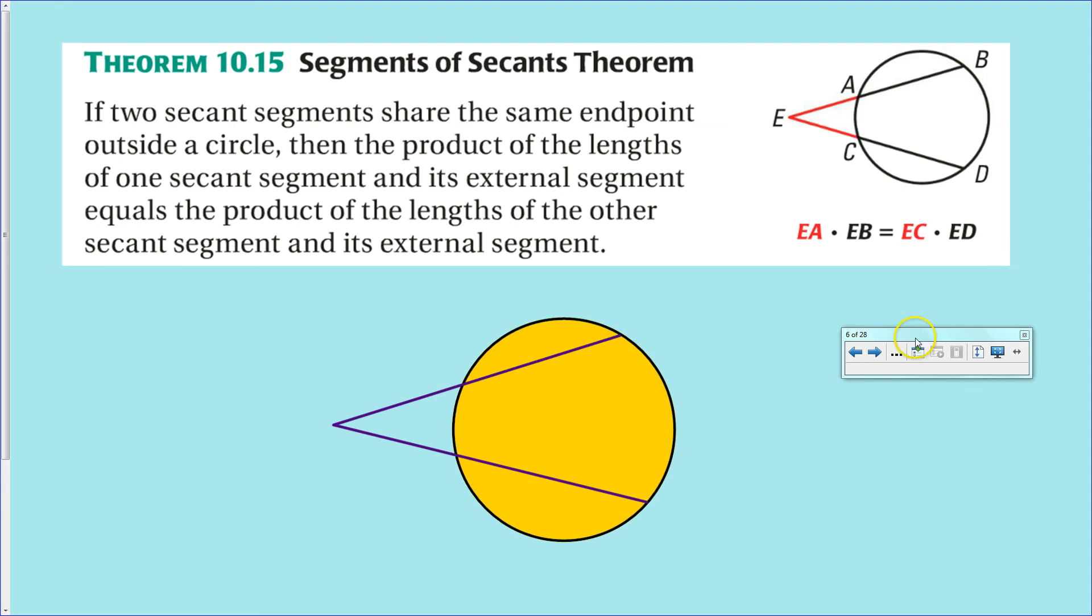Next one, exterior intersection with two secant lines. And again, you can notice that if you were to draw a line right here and draw a line right here, you would have something that looked an awful lot like a pair of similar triangles. And again, you could write a proportion equation, and again, you could cross multiply. And again, you would get a result of that, and it would look an awful lot like this.